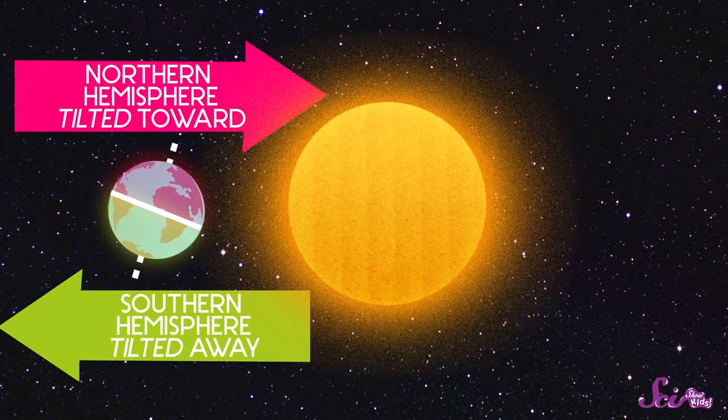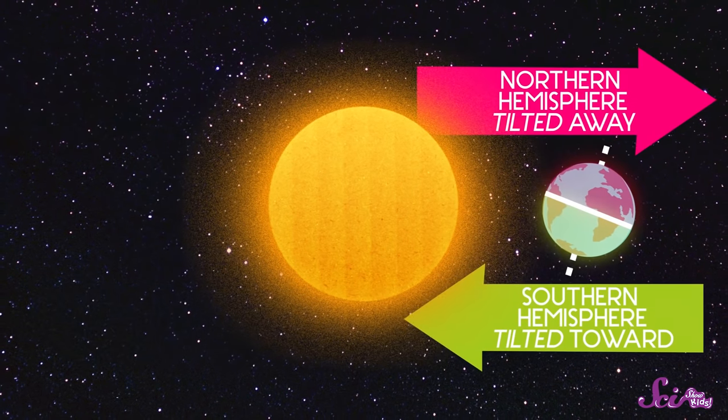Sometimes during the year, part of the Earth tilts toward the Sun. Sometimes it tilts away from the Sun. When the part of the planet you're on is tilted toward the Sun, it's summer. When it's tilted away from the Sun, it's winter.